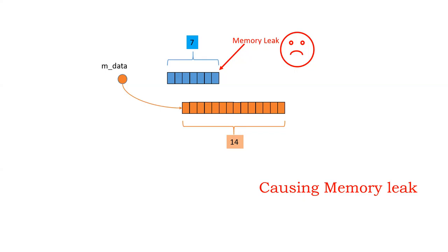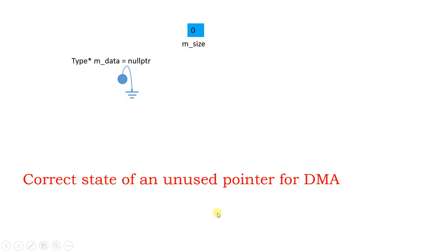Student: If you're reallocating memory, you have to remove the previous one first, always. But won't the data on the old one be wiped? Instructor: Of course. You have to take care of that yourself. Like cleaning and throwing boxes away — you have to look inside first. If the contents are garbage, who cares? If not, you have to move them to the proper place. The correct state of an unused pointer for dynamic memory allocation is always null and size set to zero.